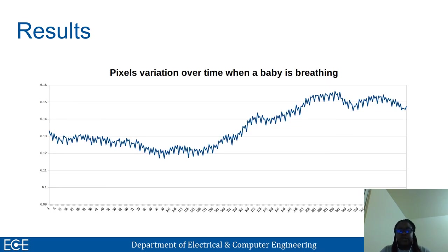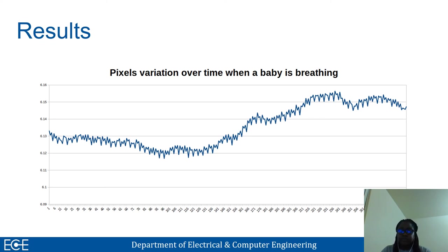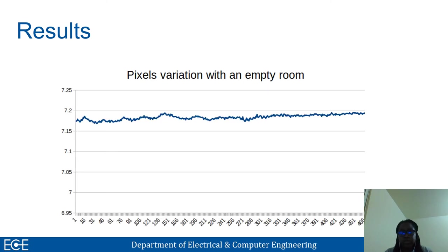Another result here represents the pixel variation over time when the baby is breathing. As you can see, we can observe consistent variation over time, meaning that there is activity within the sleep environment of the baby. However, when there is no activity — which we assume means no breathing — the variation is mostly constant, which would lead to a critical situation.